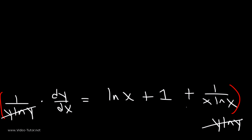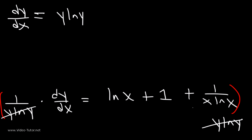So these will cancel on the left, leaving dy/dx, which is the derivative of y. And y is x to the x to the x. So whatever's on the right side is the derivative of x^(x^x). We're going to have y·ln(y) times everything on the right side, that is ln(x) + 1 + 1/(x·ln(x)).